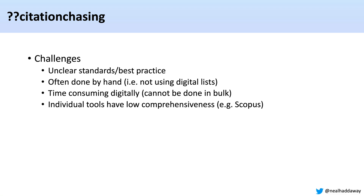Some of the challenges are that it's unclear what the best practices are and which starting points should be used. It's often done by hand — some people print out PDFs or use digital PDFs to search for individual records. If done digitally it's quite time consuming because it's very difficult to do in bulk. Some tools like Scopus allow it already, where you can put in a list of DOIs and see who has been cited or who has cited that list. But they're based on individual databases, so the number of records is not comprehensive — you might not get all of the references in the reference list for your articles.